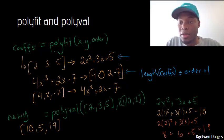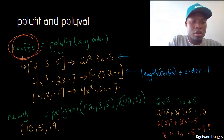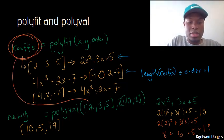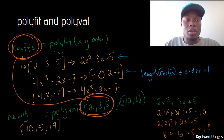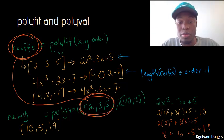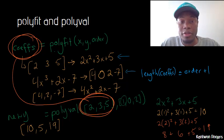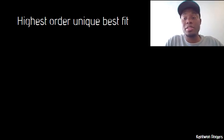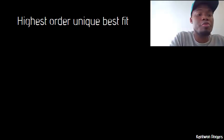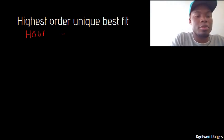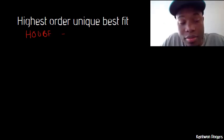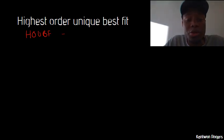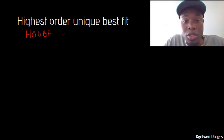Notice this is why polyfit and polyval are like a couple — the output of polyfit is what we then use as the input to polyval. We create a polynomial by fitting it to our data, and then we can plug in new x values in order to figure out new y values. The last topic is the highest order unique best fit polynomial — I'll abbreviate this as HOBAF. The highest order unique best fit is the highest order polynomial that is unique to your data.